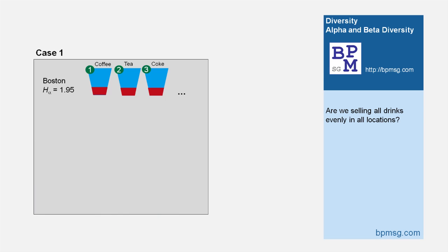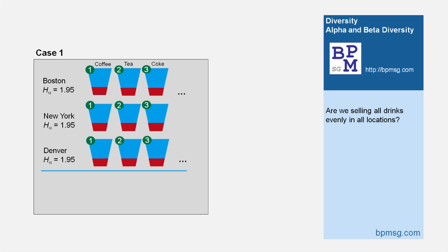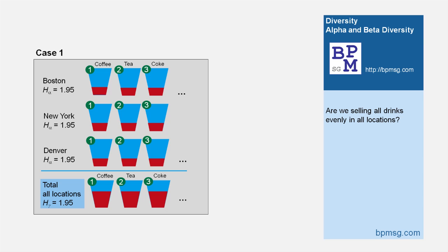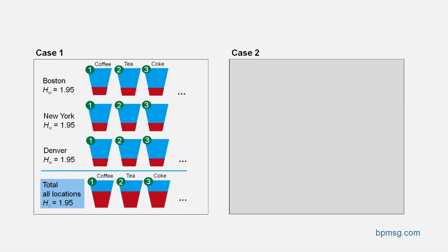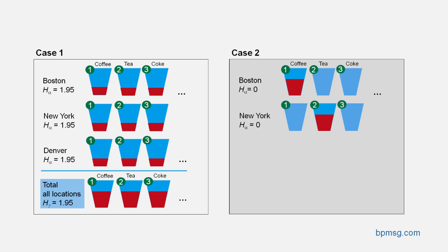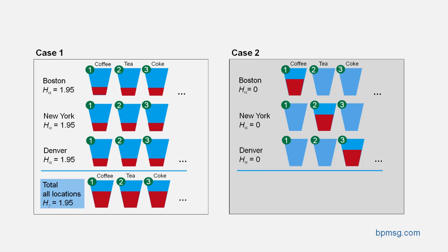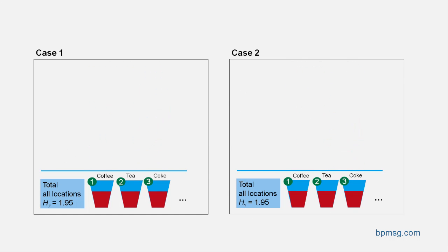Does it mean we are selling all drinks evenly at all locations? There are two extreme possibilities. The first one: yes — at each location, we sell evenly all types of drinks. High diversity, or Shannon Entropy of 1.95, in Boston, New York, Denver, etc., resulting in a high diversity of sales rates for the total sales area. The second possibility: in Boston, we are selling coffee only — low diversity with Shannon Entropy of zero. Similarly in New York, we are selling tea only — low diversity with Shannon Entropy of zero, but a different type of drink. Similarly in Denver with Coke, and so on. Now looking at our total sales, it looks the same as in the first case — the total diversity is high, as overall we are selling all drinks equally.